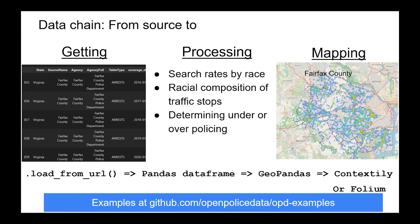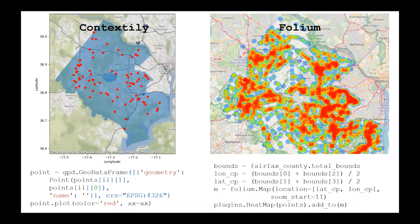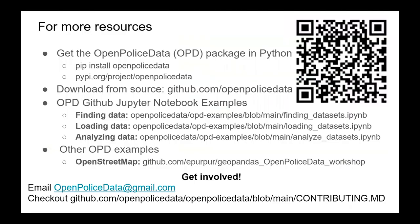For example, with contextily it's just a few lines of code to plot either incidents or summarized data. Folium also has great, easy-to-use features for heat maps and other ways to present the data, all using OpenStreetMaps.